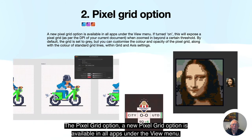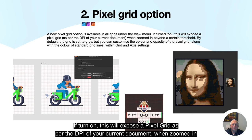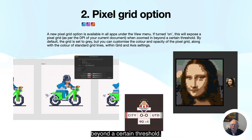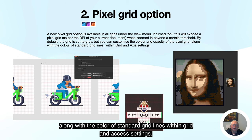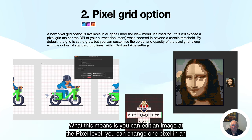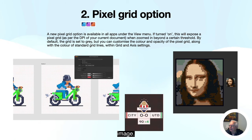The pixel grid option: a new pixel grid option is available in all apps under the view menu. If turned on, this will expose a pixel grid as per the DPI of your current document when zoomed in beyond a certain threshold. By default the grid is set to grey, but you can customize the color and opacity of the pixel grid, along with the color of standard grid lines within grid and axis settings. This means you can edit an image at the pixel level — you can change one pixel in an image!